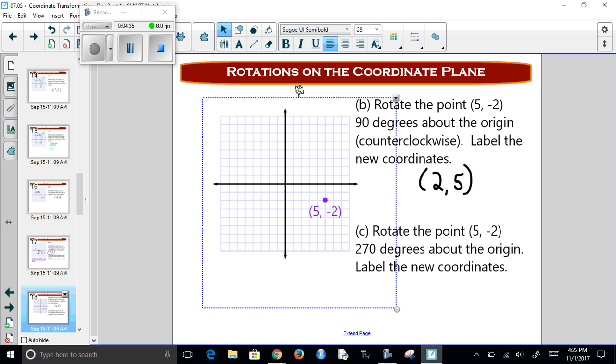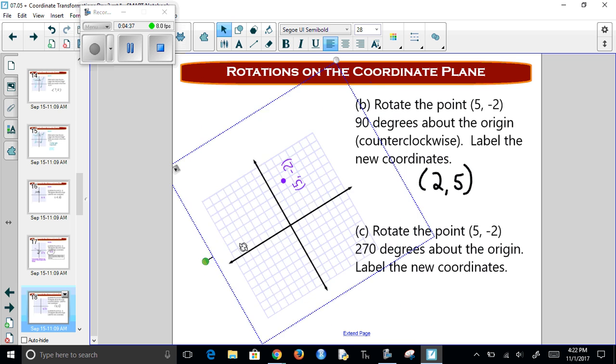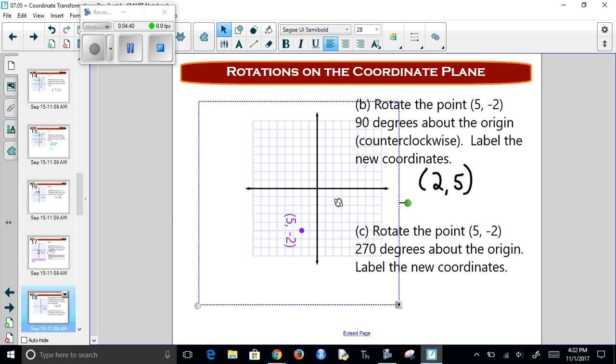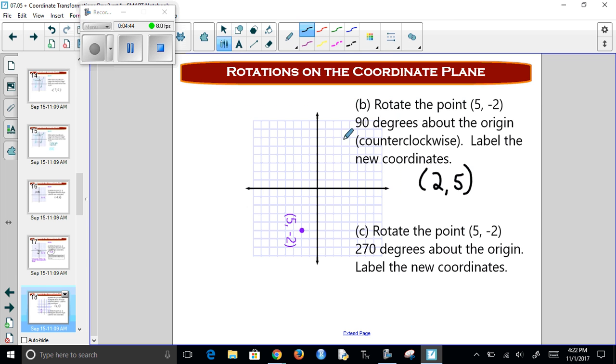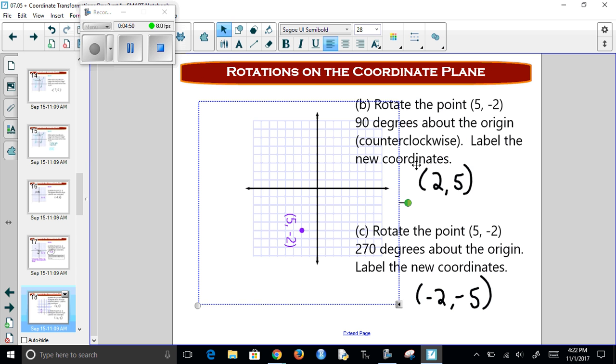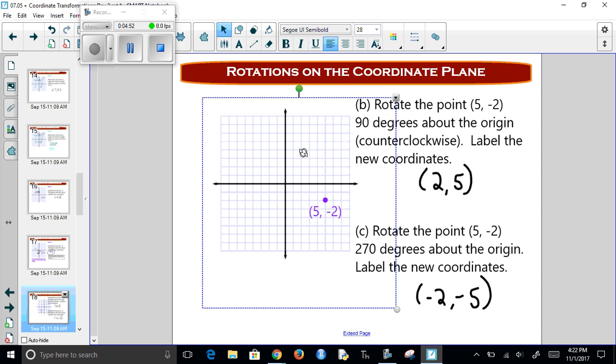If I rotate it 270 degrees, there's 90, 180, 270. So now it's 2 to the left and 5 down. So I'm going to go 2 to the left and 5 down. Then we can return it to its original position.